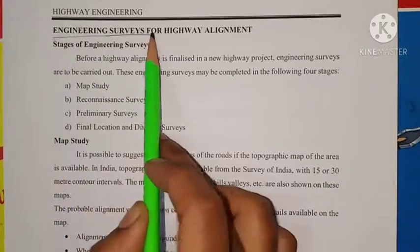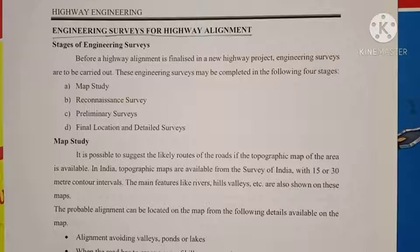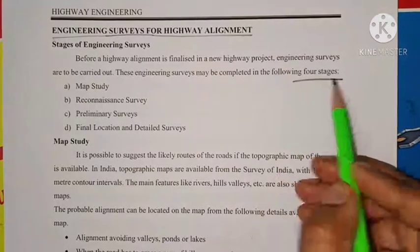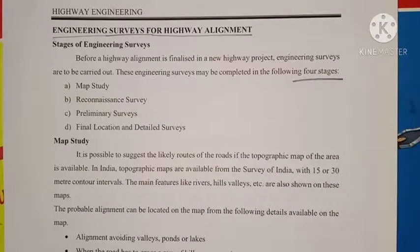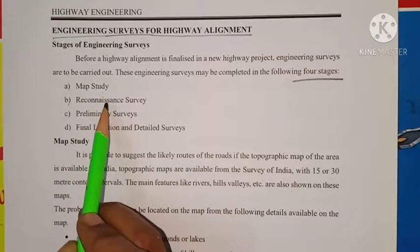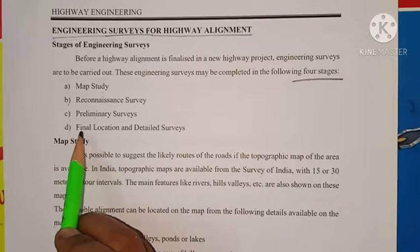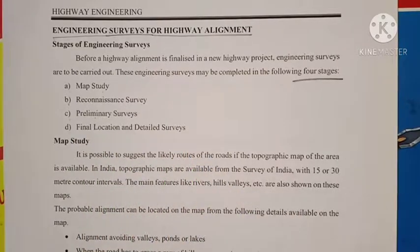Next is engineering surveys for highway alignment. Before a highway alignment is finalized, an engineering survey is carried out. This engineering survey is done in four stages: map study, reconnaissance survey, preliminary survey, and final location and detailed survey.